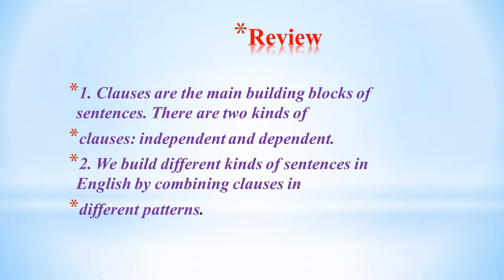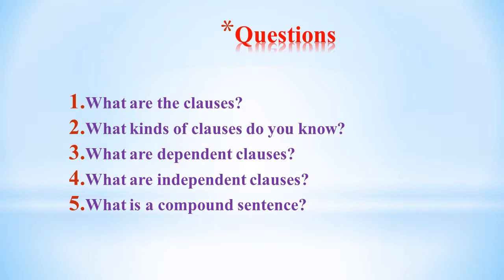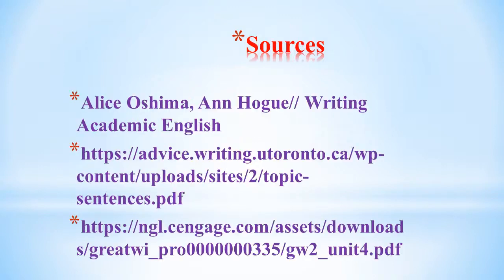For reviewing the lecture, consider these key points: clauses are the main building blocks of sentences; there are two types of clauses — independent and dependent; we build different kinds of sentences in English by combining clauses in different patterns. Review questions: What are clauses? What kinds of clauses do you know? What are dependent clauses? What are independent clauses? What is a compound sentence? Recommended source: Alice Oshima, 'Writing Academic English.'